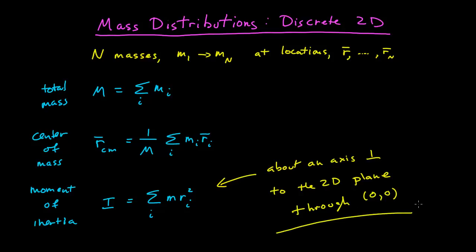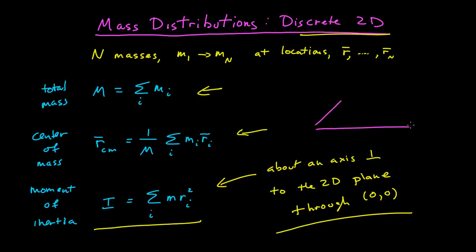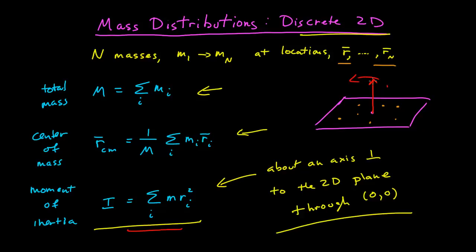It's important to qualify exactly what we're talking about. We have a distribution of masses in a two-dimensional plane. The total mass, center of mass in that plane, and moment of inertia about an axis perpendicular to that plane are all defined. The masses are at fixed locations relative to each other, forming a rigid object rotating about that axis through the origin.